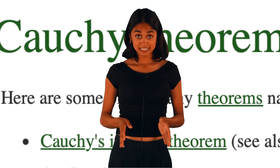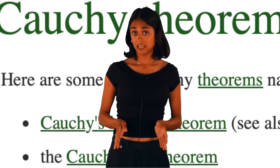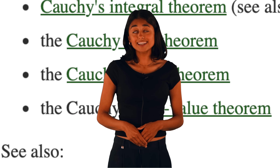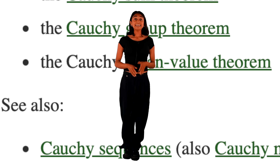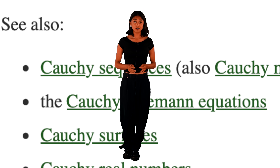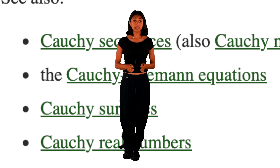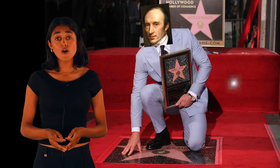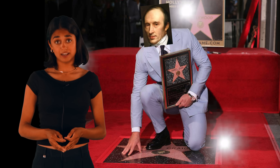More concepts and theorems have been named for Cauchy than any other scientist. He's kind of a big deal. In elasticity alone, there are 16 concepts and theorems named after Cauchy, making him a hall of famer in engineering. For both you and I to learn more, let's check out my interview with our friend Daniel.